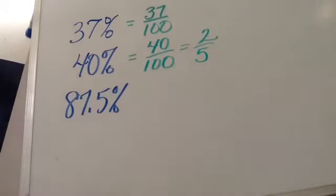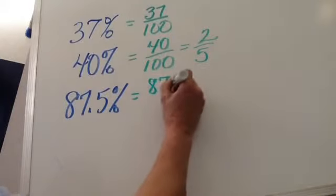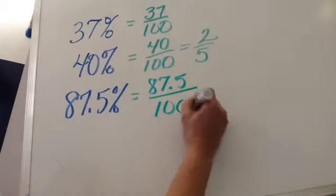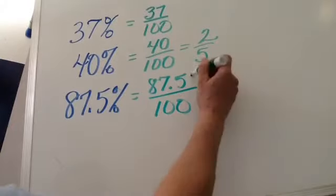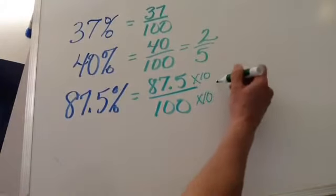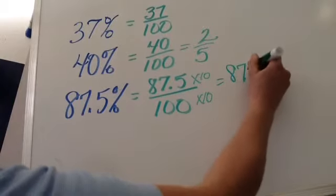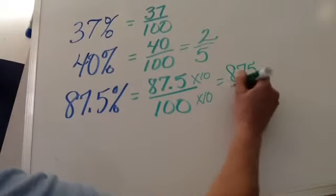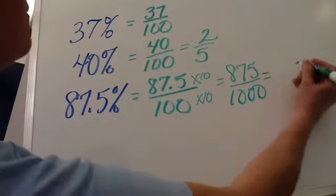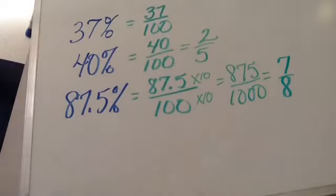87 and five-tenths percent becomes 87 and five-tenths hundredths. Multiplying top and bottom by 10 to remove the decimal from the fraction, it becomes 875 thousandths, which simplifies to seven-eighths.